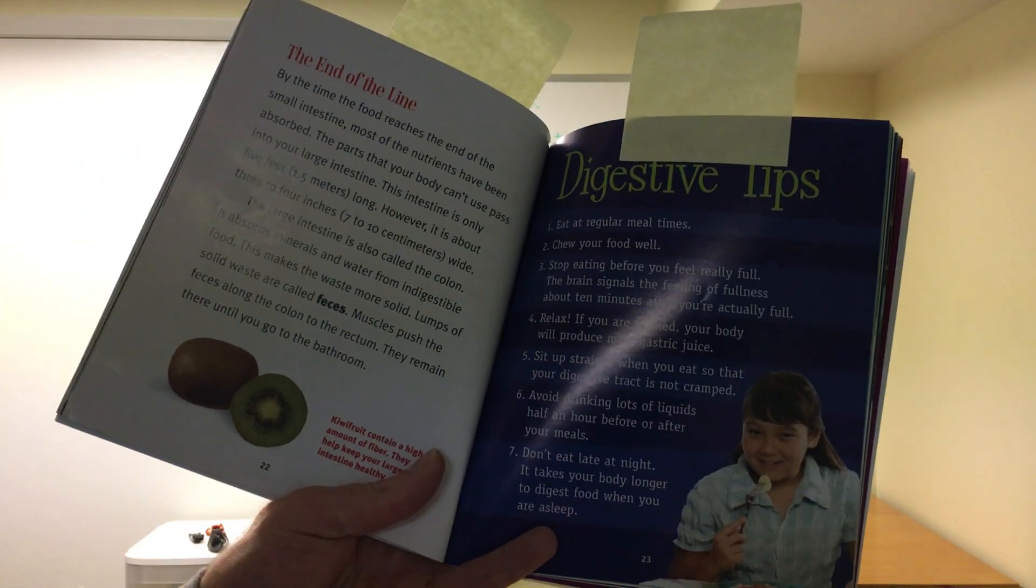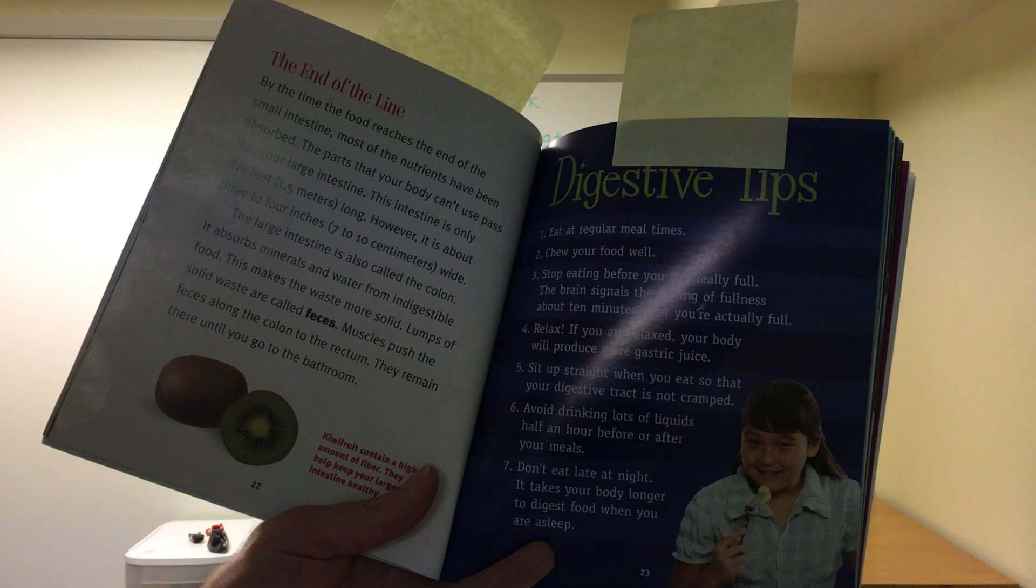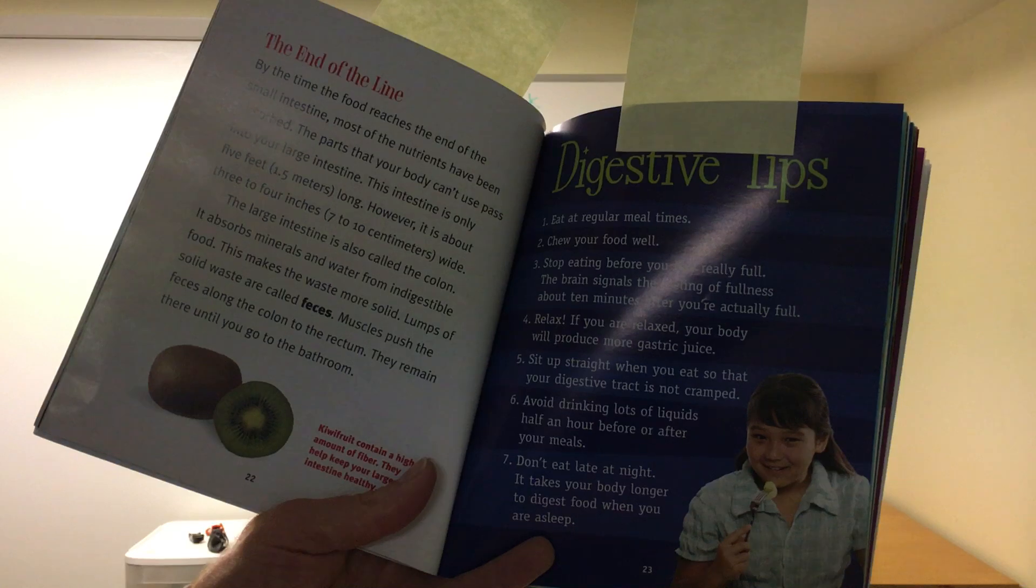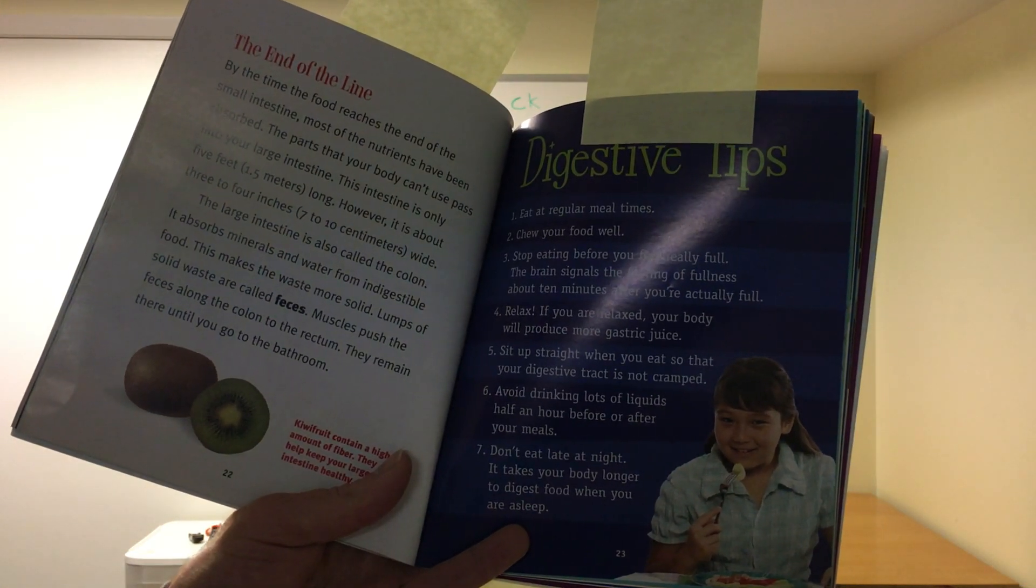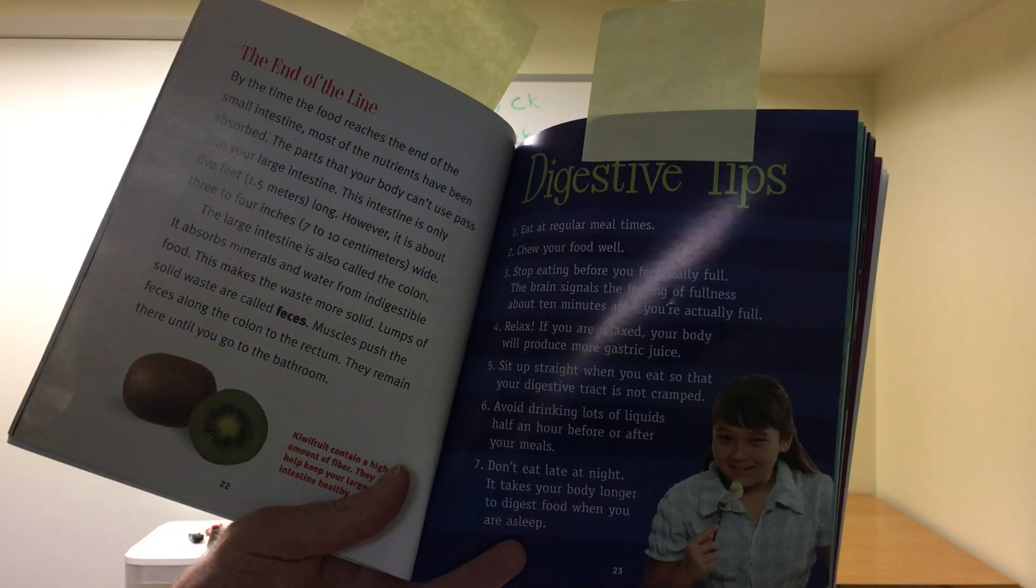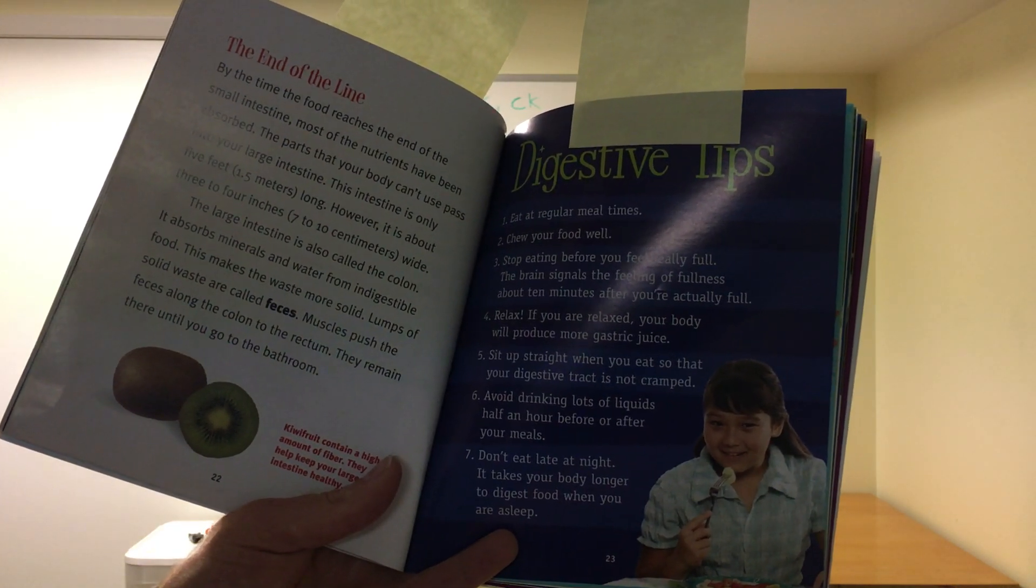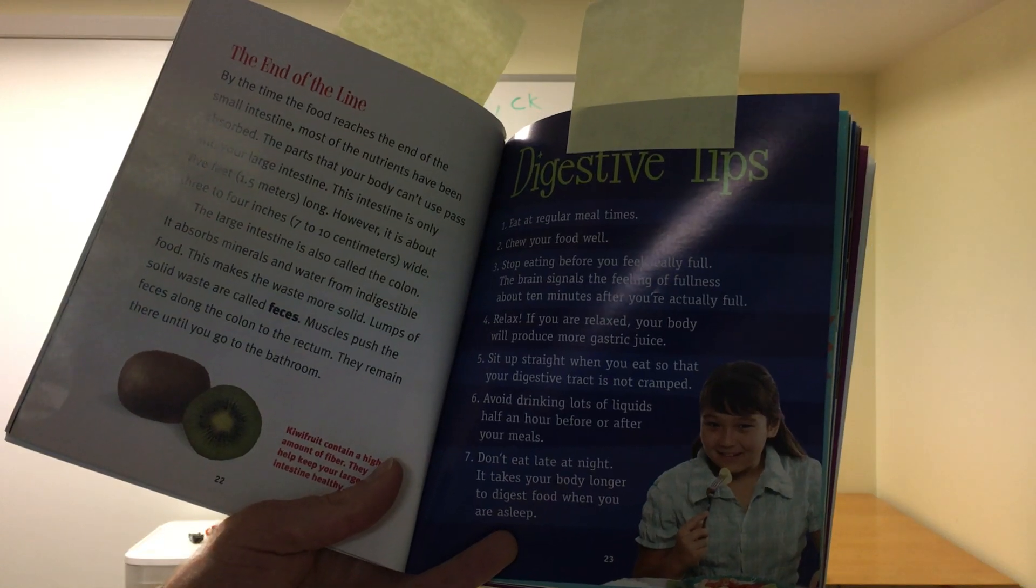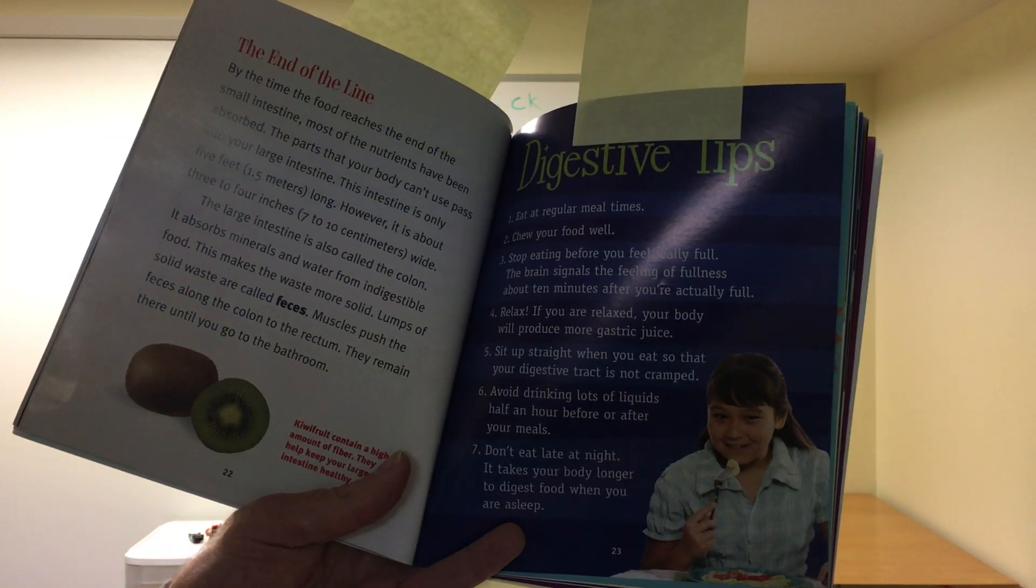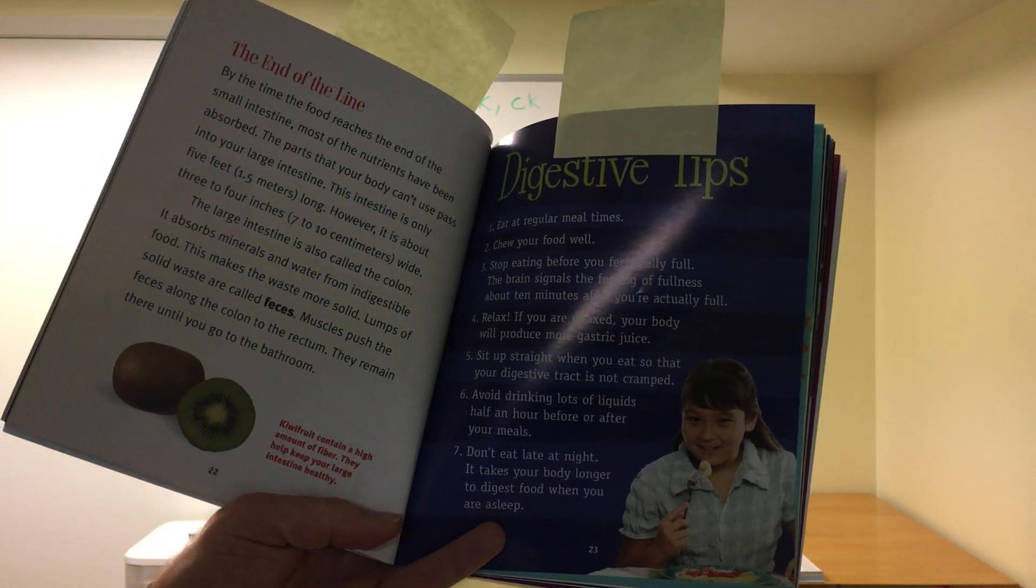The end of the line. By the time the food reaches the end of the small intestine, most of the nutrients have been absorbed. The parts that your body can't pass into your large intestine. This intestine is only 5 feet long. However, it's 4 to 5 inches wide. The large intestine is also called the colon. It absorbs minerals and water from indigestible food. This makes the waste more solid. Lumps of solid waste are called feces. Muscles push the feces along the colon to the rectum. They remain there until you go to the bathroom. So, you poop out your waste is essentially what it is.